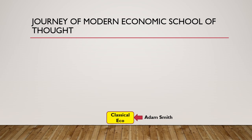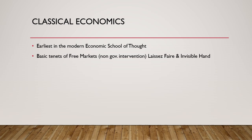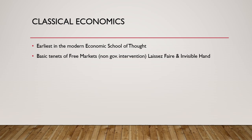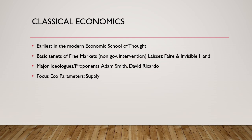Modern economics pretty much started with Adam Smith when he wrote The Wealth of Nations; other economists like Ricardo contributed to it, and together this is called Classical Economics — the earliest modern school of thought. The basic tenets of classical economics are free markets, non-government intervention, and the concept of the invisible hand laid down by Adam Smith. Major ideologues include Adam Smith and David Ricardo, who gave the principle of comparative advantage. The primary economic parameter this school of thought focuses on is supply; prices are determined by the cost of goods, essentially relying upon the labor theory of value.